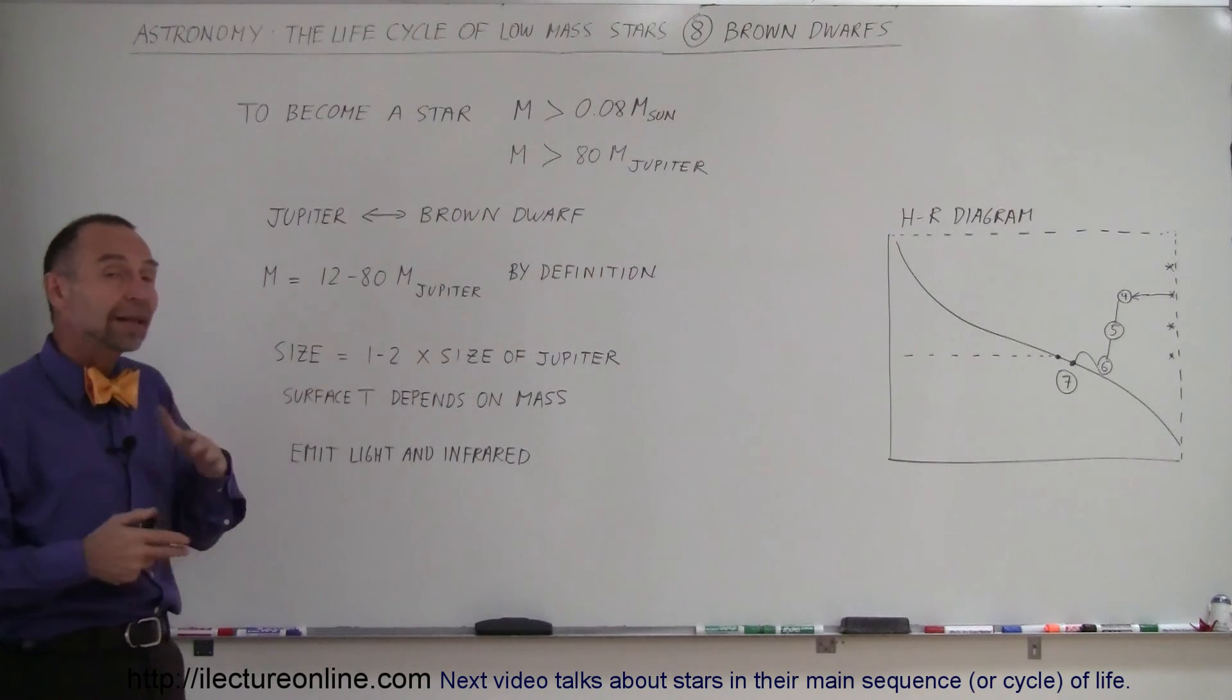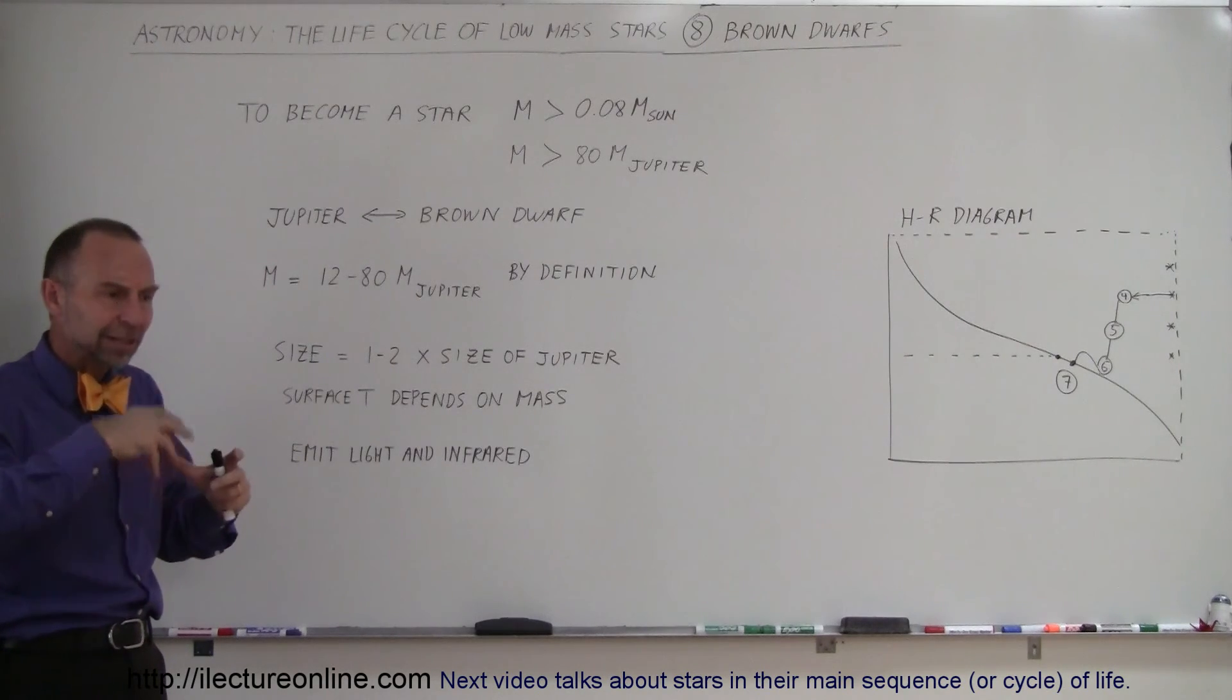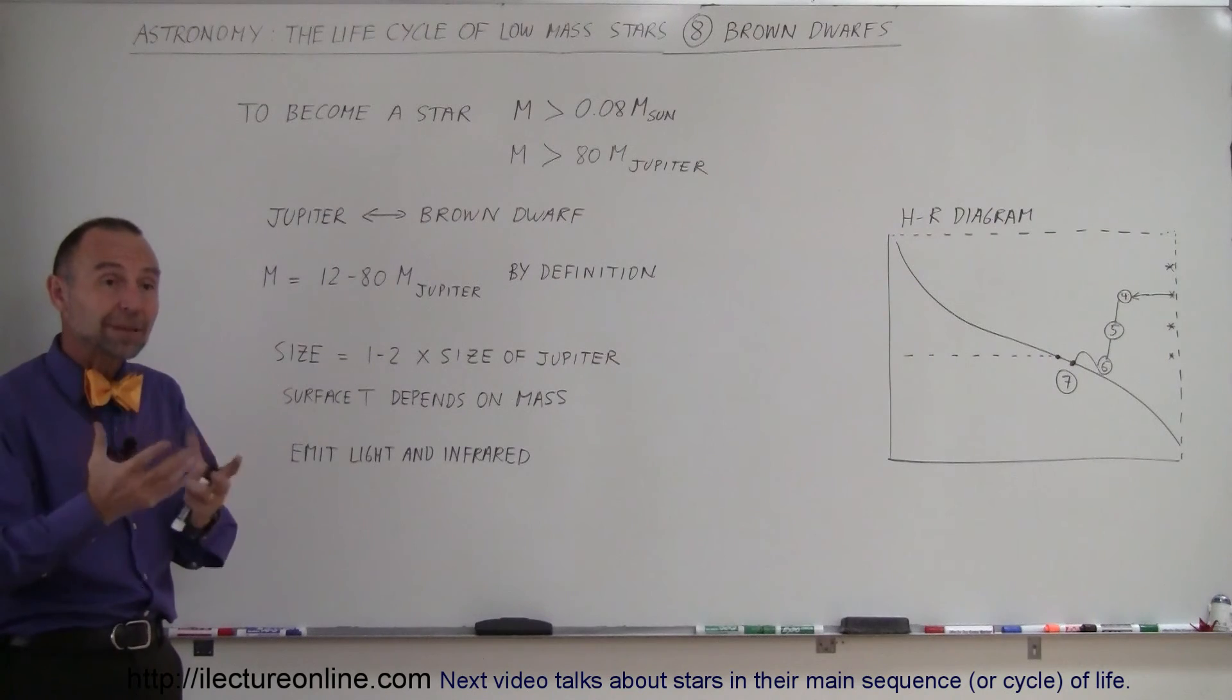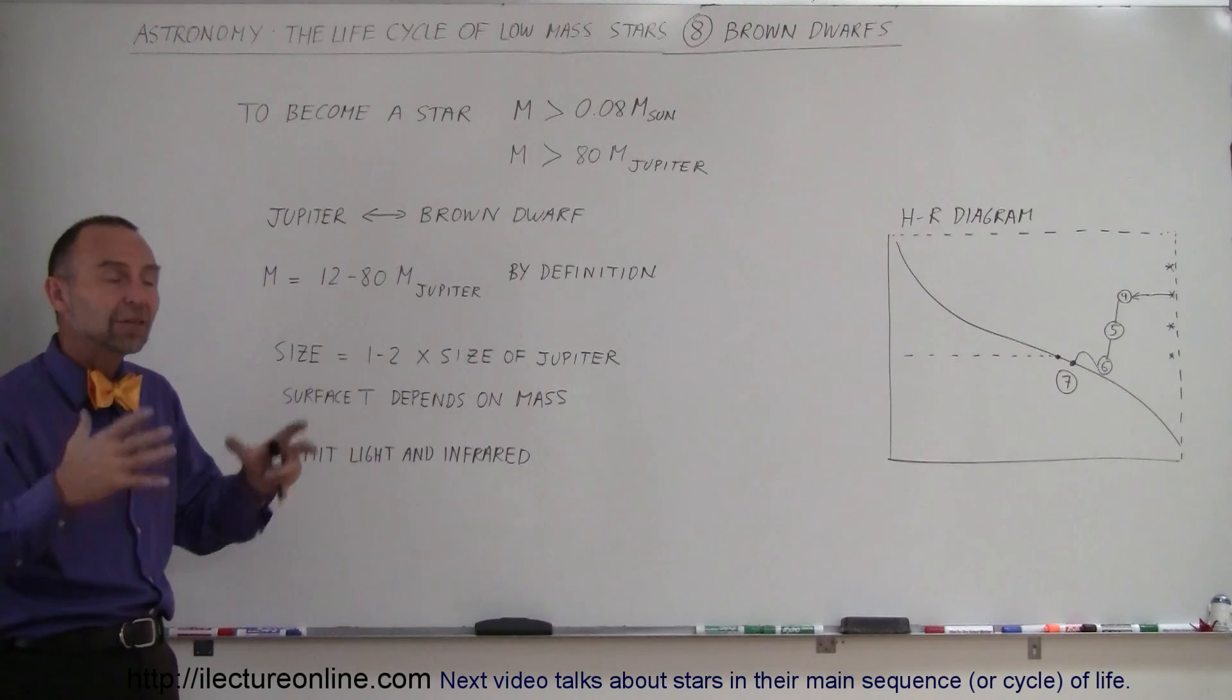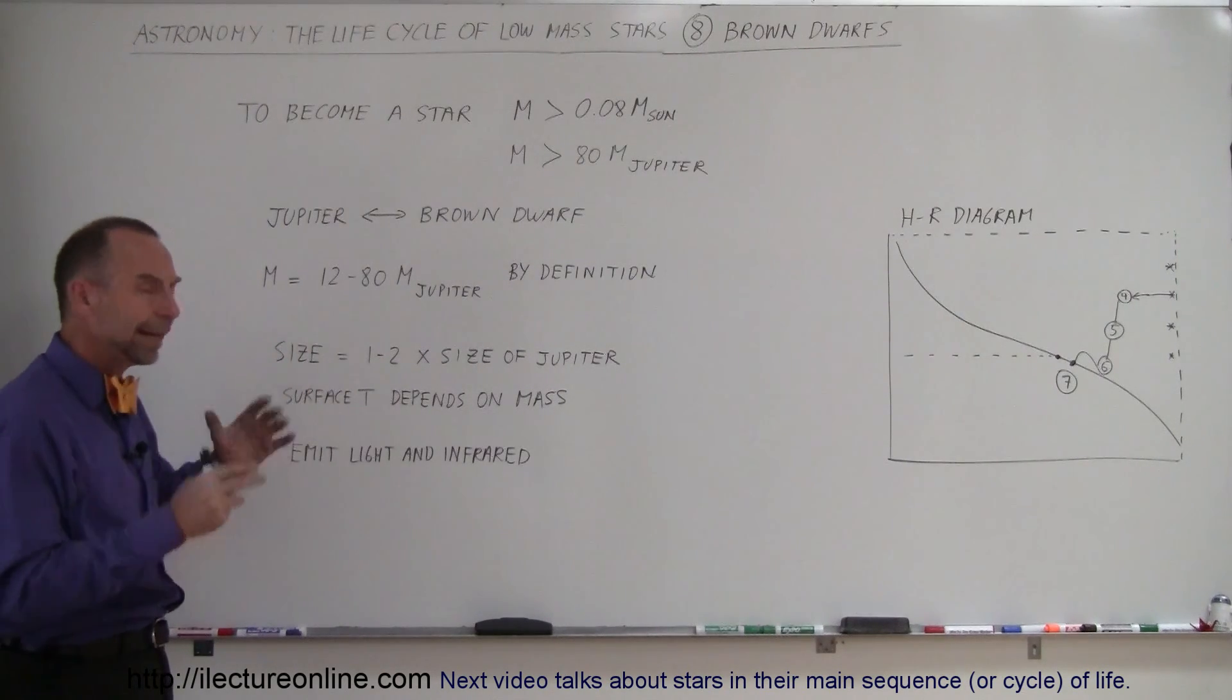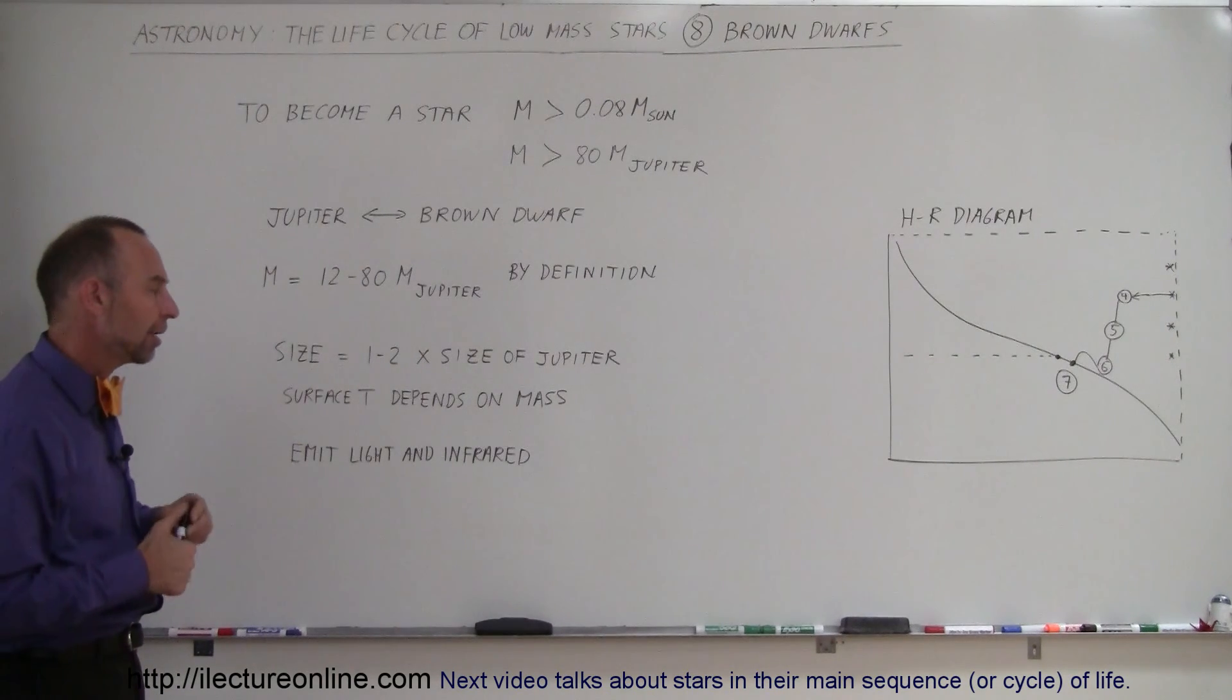Surface temperature depends a lot on the mass of the object. If it's a very massive object, like 20, 30, 40 times the mass of Jupiter, the surface temperature can be several thousand degrees. Slowly over time, as the temperature dissipates into space, it will get smaller, glow less and less, and slowly fade out of sight.